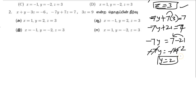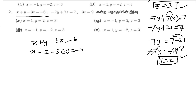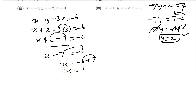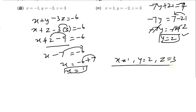Now, equation number 1: x plus y minus 3z equals minus 6. Substituting y=2 and z=3: x plus 2 minus 3×3 equals minus 9, equals minus 6. Then 7 minus 6 is 1. So, x equals 1, y equals 2, z equals 3.